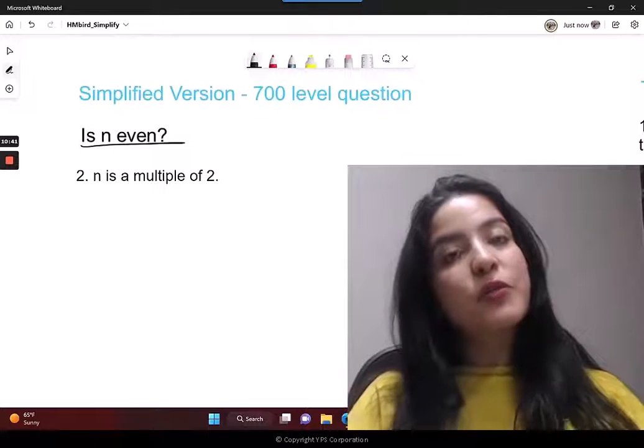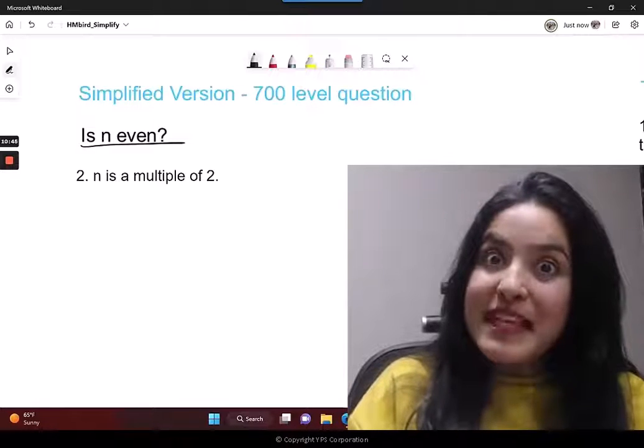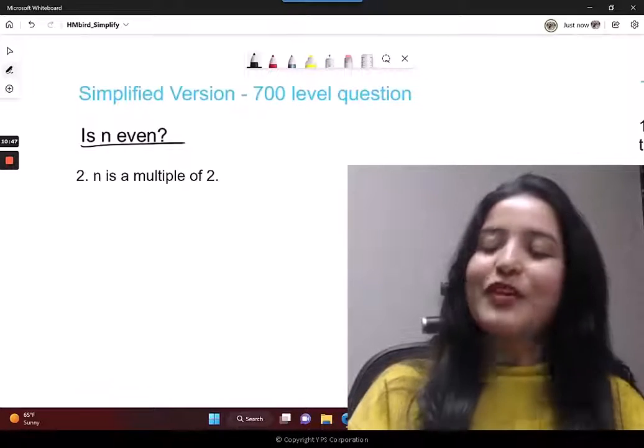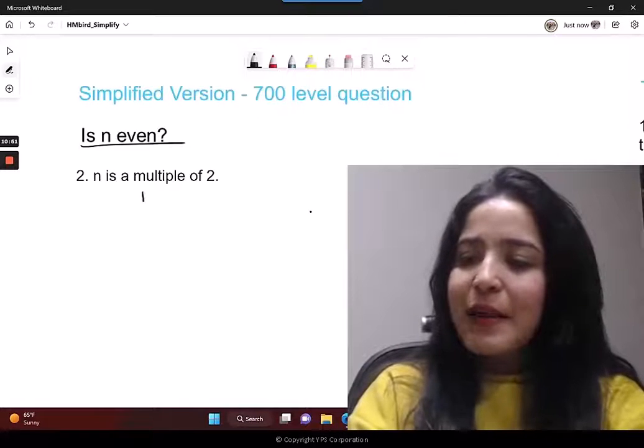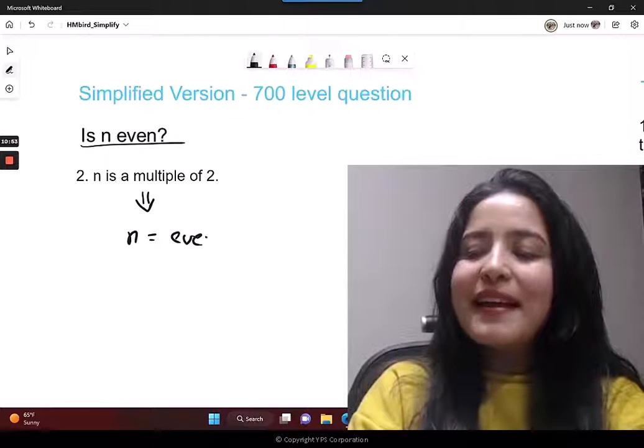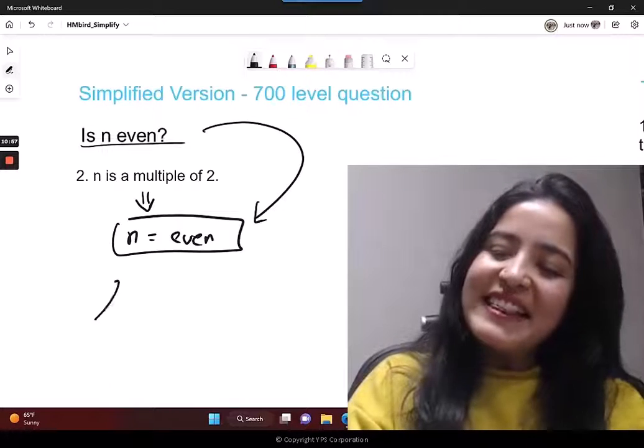What do you need? You need to look at the second statement. Same question stem - I've removed statement 1 from here so you don't drag anything from there, that's a common mistake people make. So n is a multiple of 2 - oh wow, n is a multiple of 2 exactly means that n is even.